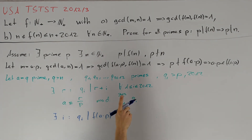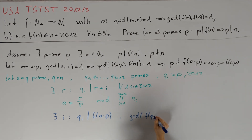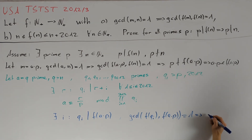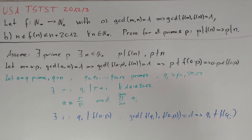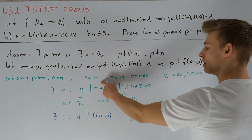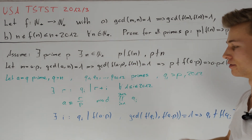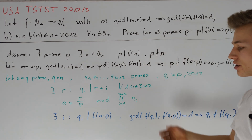This implies by condition (a) that gcd(f(qi), f(a·p)) = 1, which directly implies that qi does not divide f(qi). At this point, we can see that if we can find infinitely many prime numbers pi such that f(pi) = pi, then we can choose our qi to be a subsequence of these primes and get a contradiction from this argument. So let's write down this claim and prove it to finish our proof.